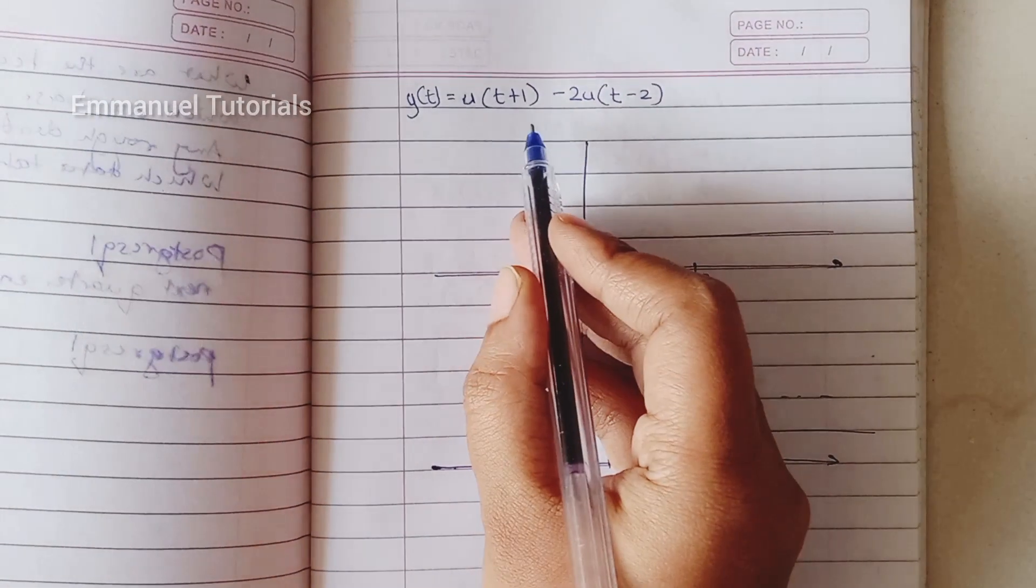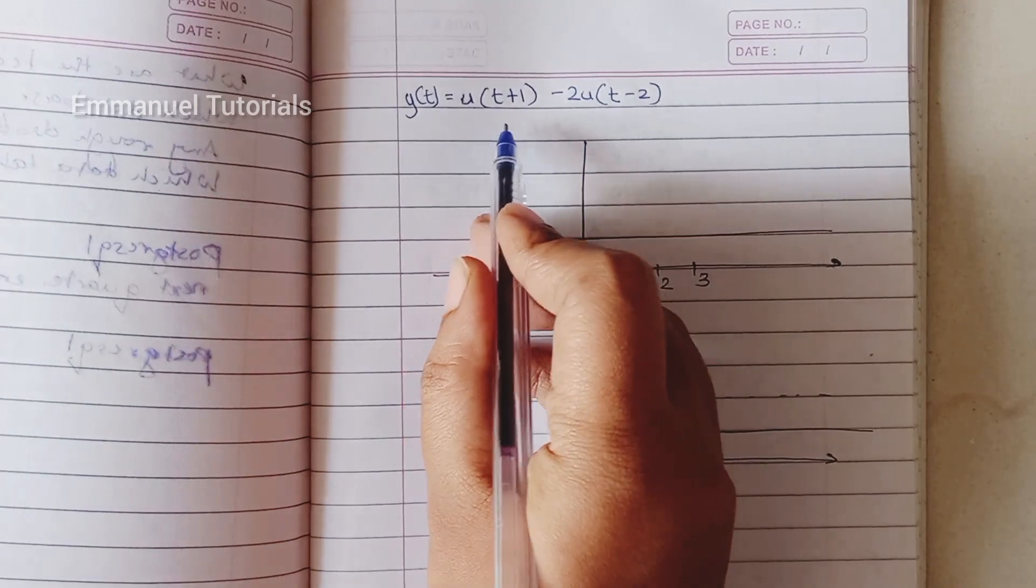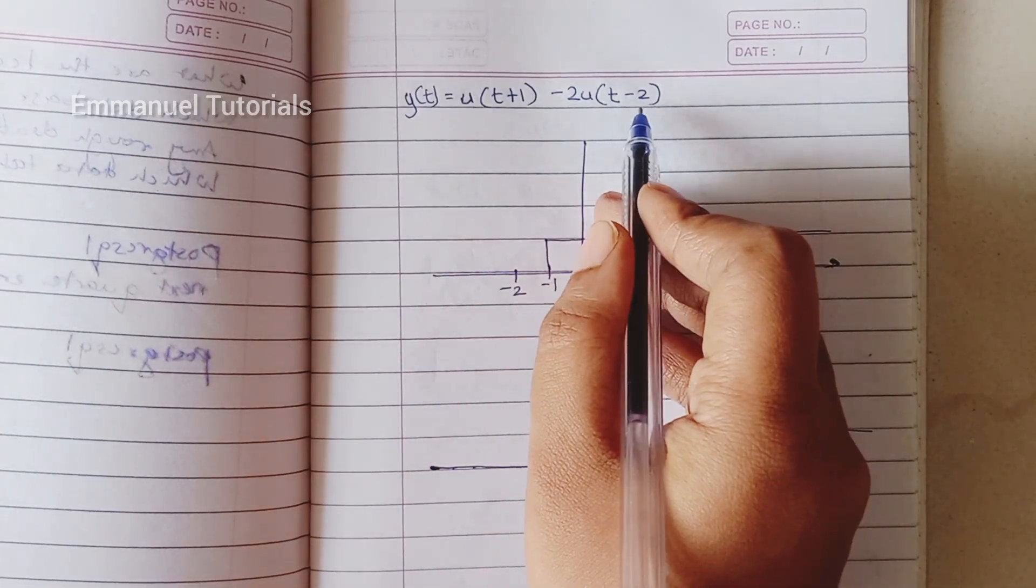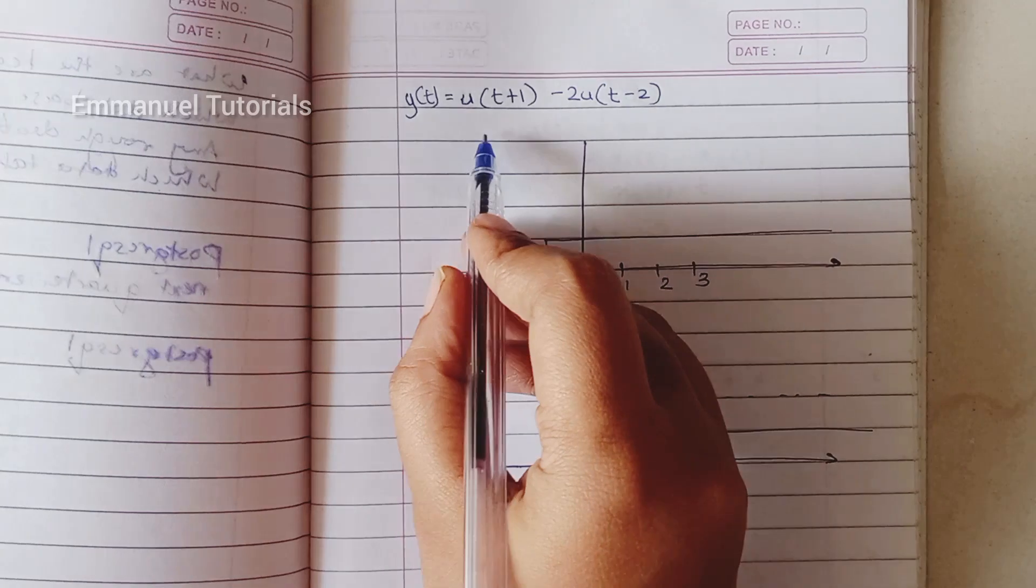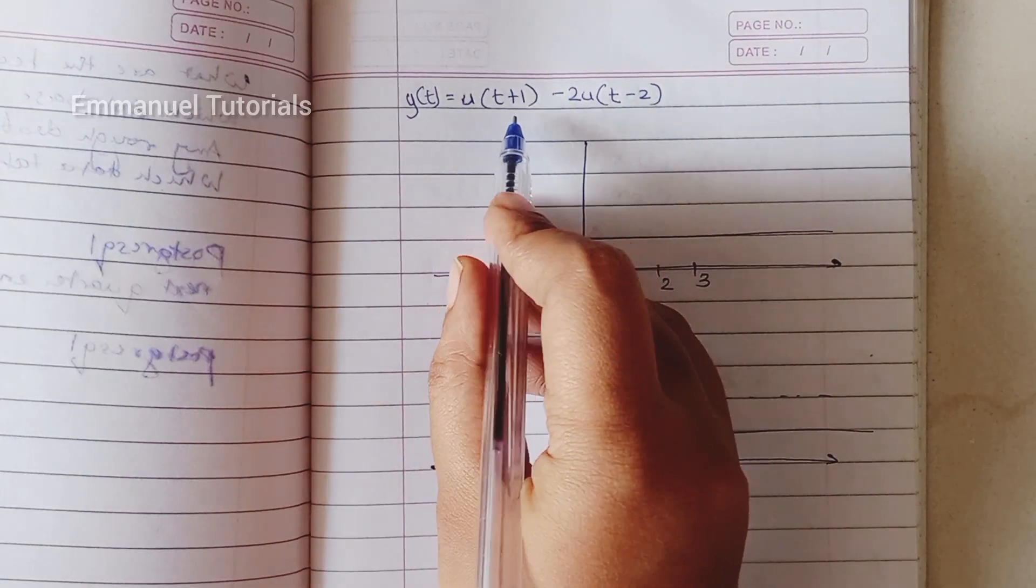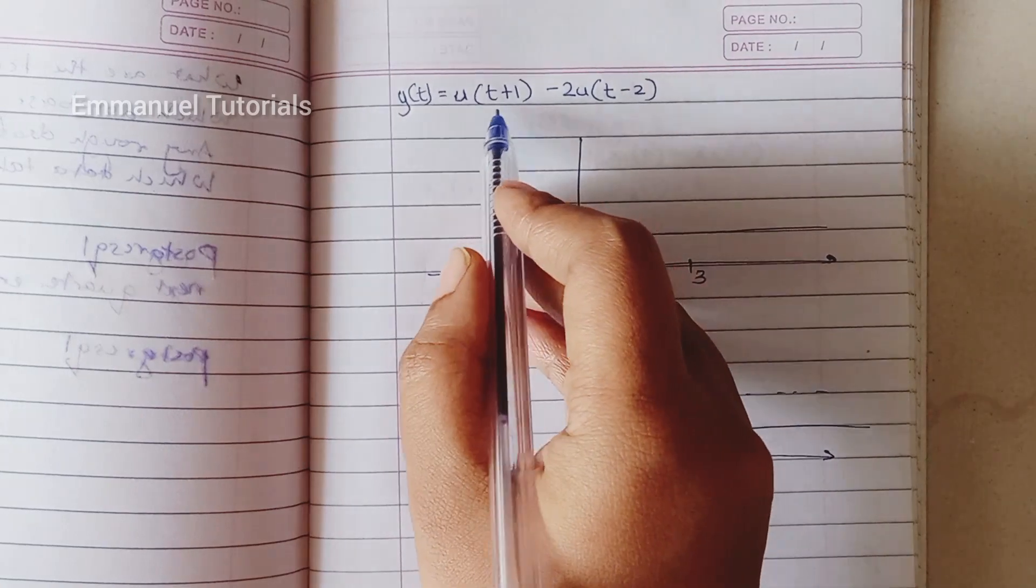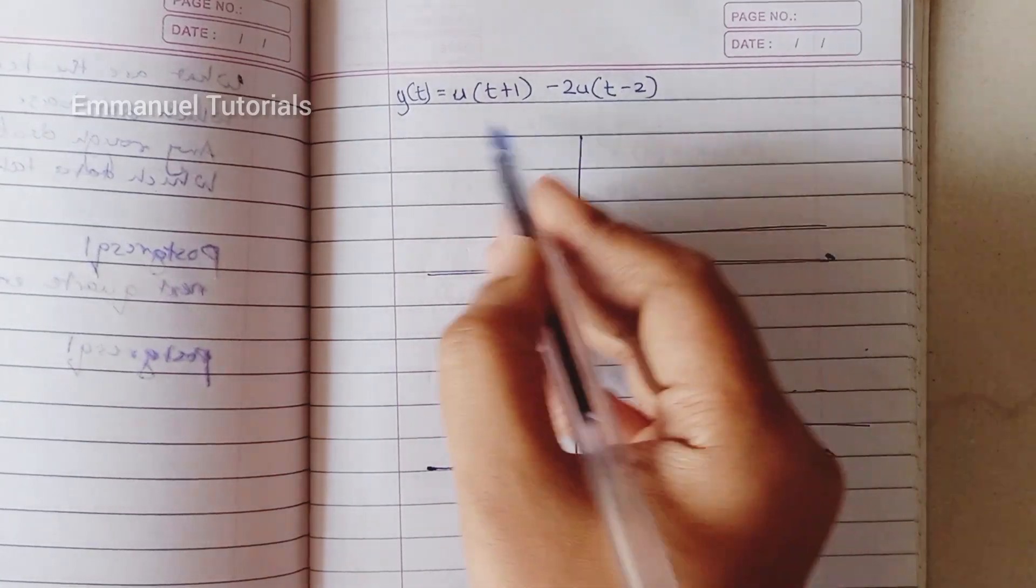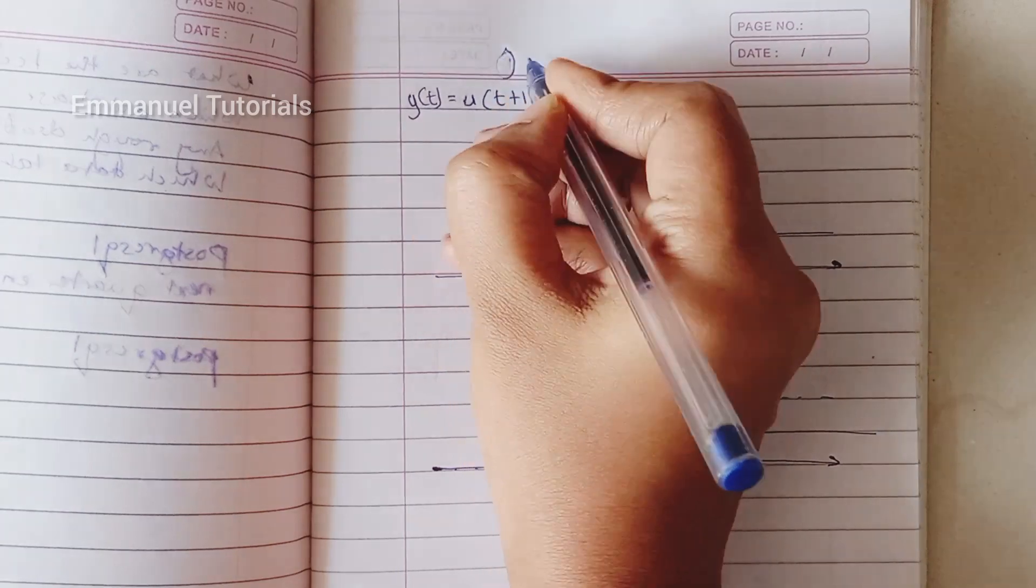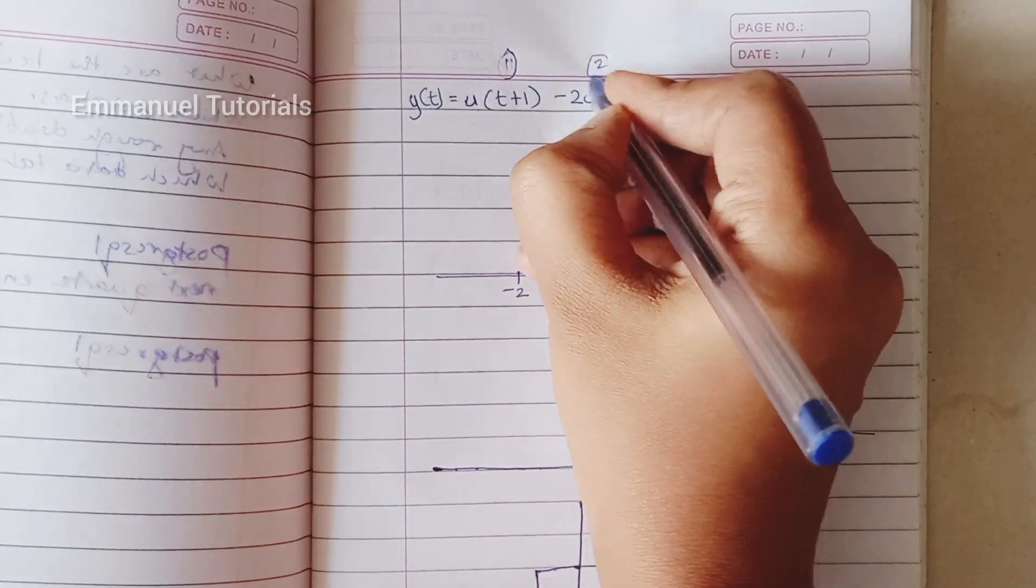So we have two parts here for y of t. It's u of t plus 1 minus 2u of t minus 2. u of t plus 1 is a shifted unit step signal and it's an advance because we have plus, and this is a delay. So let's label it as 1 and this as 2.